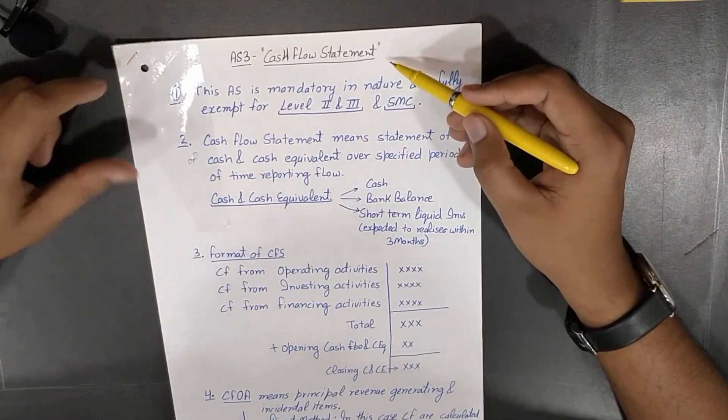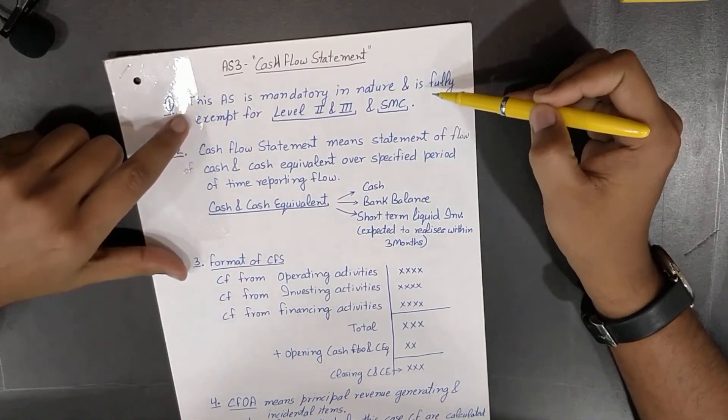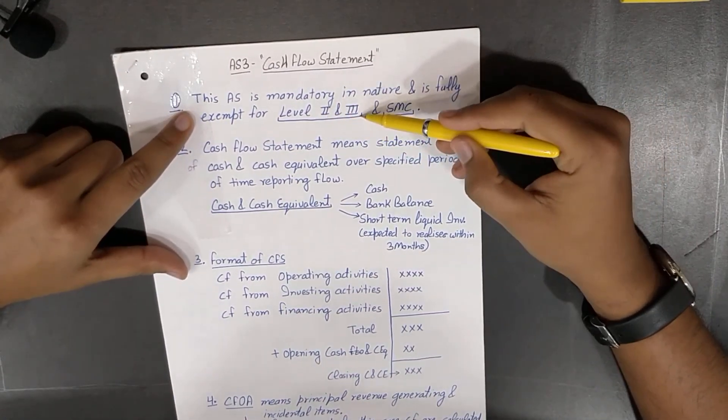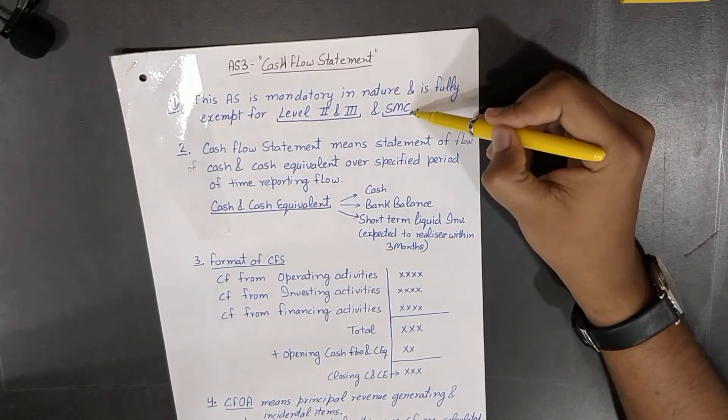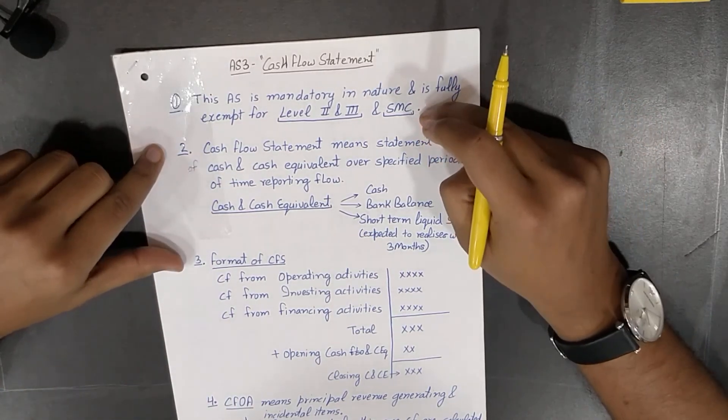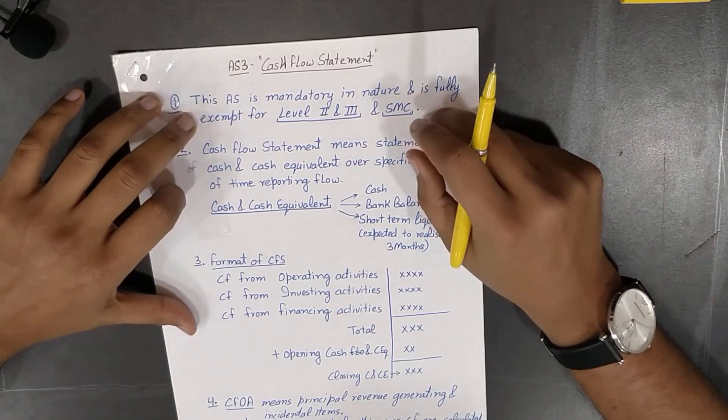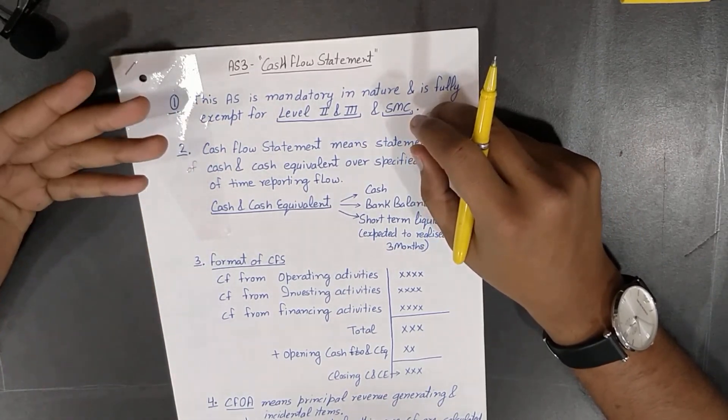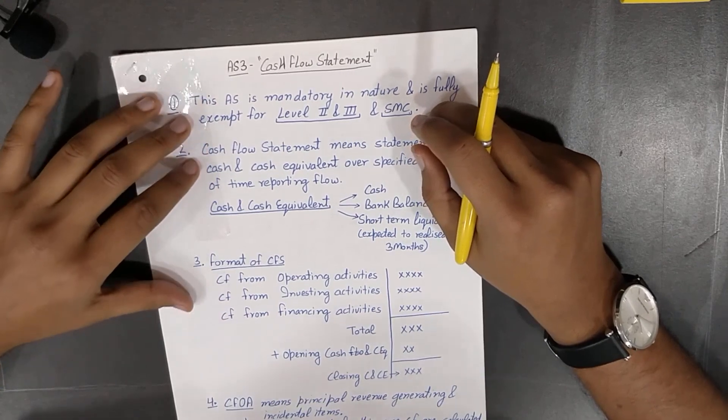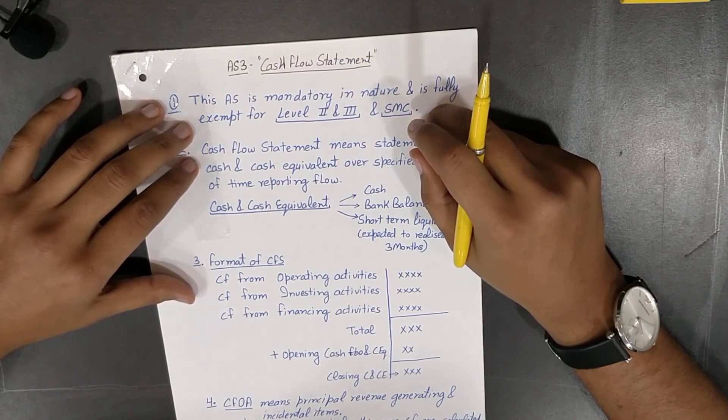Accounting Standard 3 Cash Flow Statement. This AS is mandatory in nature. It is fully exempt for Level 2, Level 3, and SMC, which means small and medium companies. We have discussed the framework of accounting standards in our previous videos. Do check them out. A question is relevant from that portion. It will just take 20 minutes of yours, but you will secure and you will be able to memorize all these things.